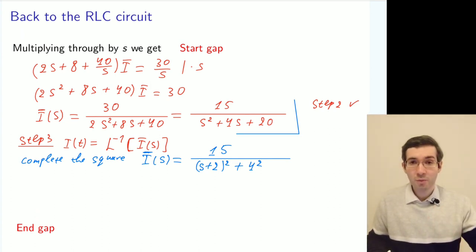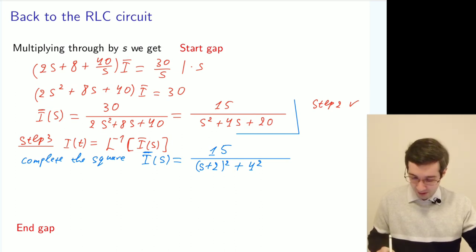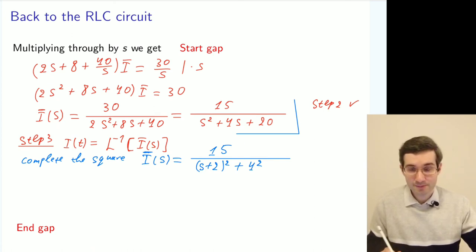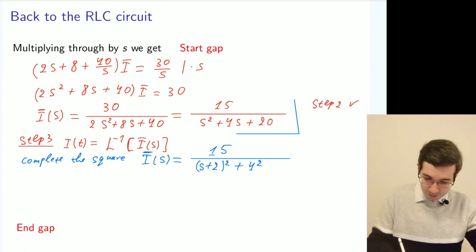Just one more step. One more operation. We need to have 4 in the numerator because this is what the table would expect us to have. So we use the linear property.